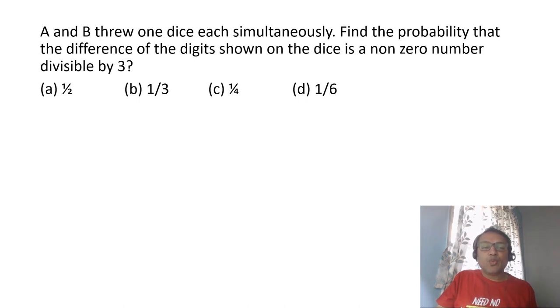A and B throw one dice each simultaneously. Find the probability that the difference in the digit shown by the dice is a non-zero number divisible by 3. A non-zero number divisible by 3 can only be 3, because 6 is not possible since the dice will show 6 and 1, and the difference will be maximum 5. That means the maximum difference can be 3.